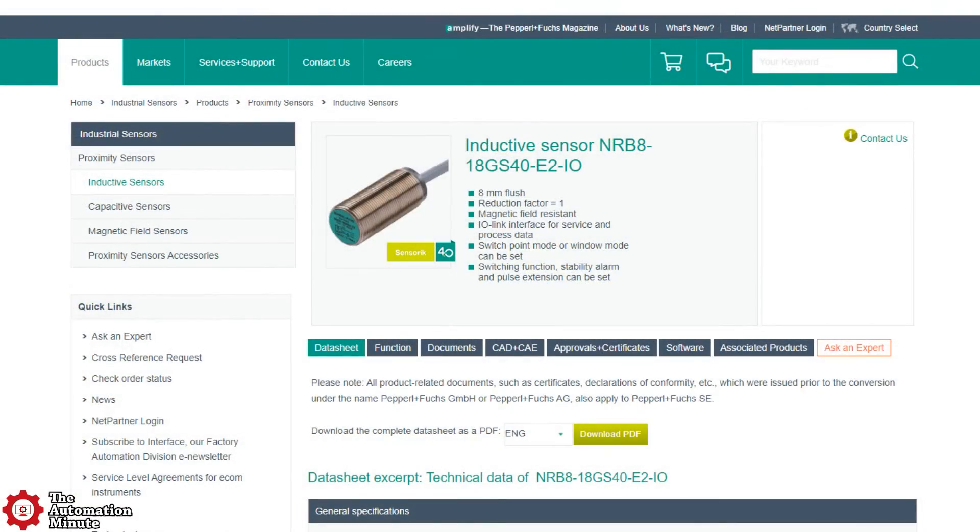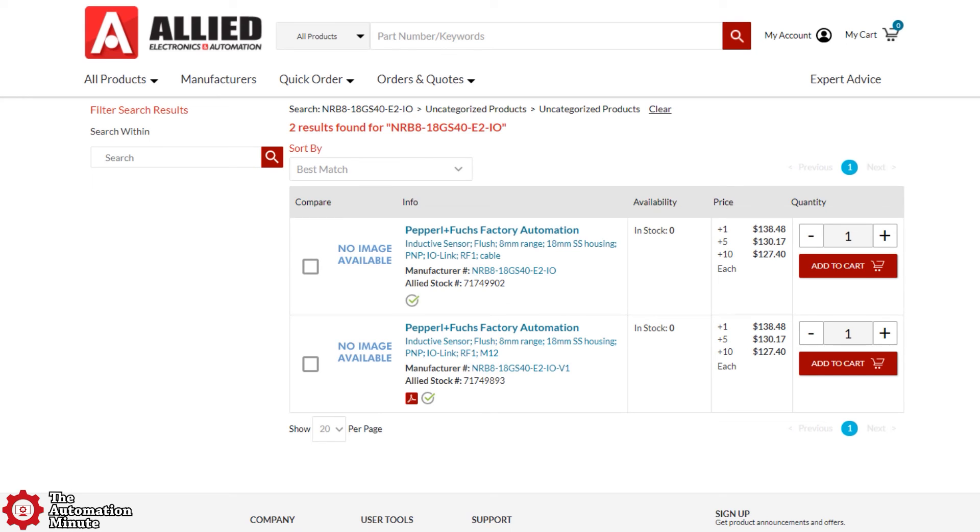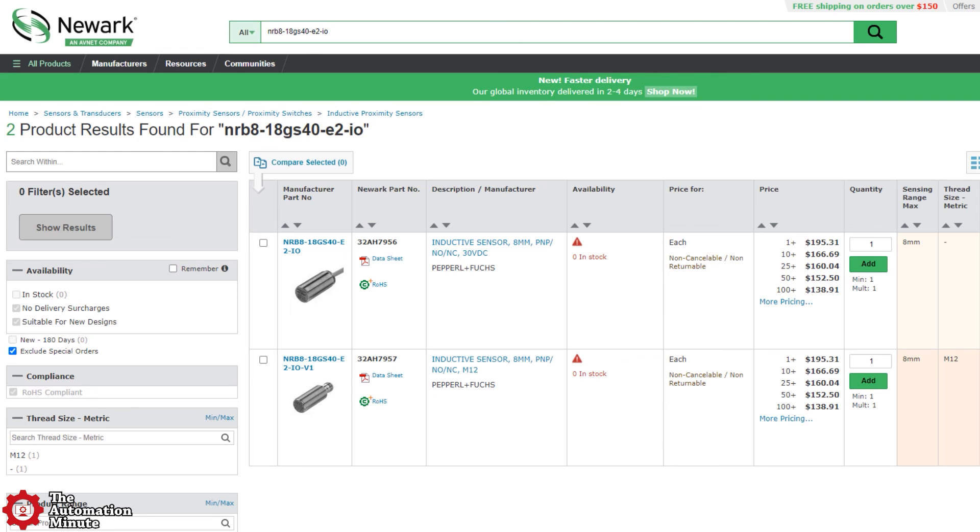Now as far as pricing is concerned, P+F didn't list this sensor's price on its website. However, major retailers had it listed from between $138 and $195 US.